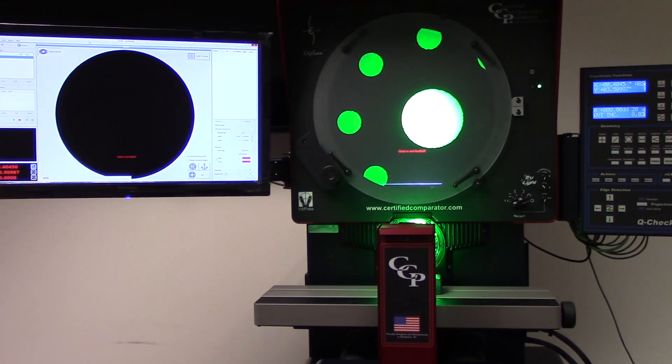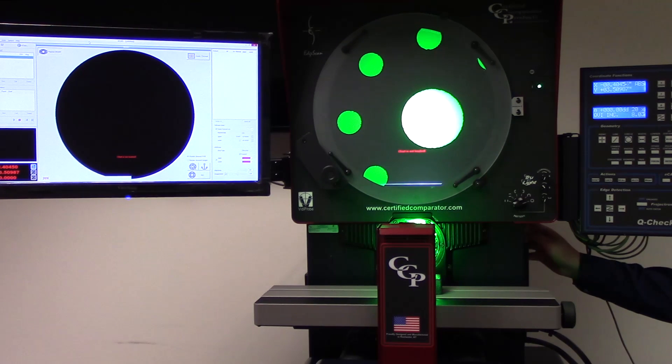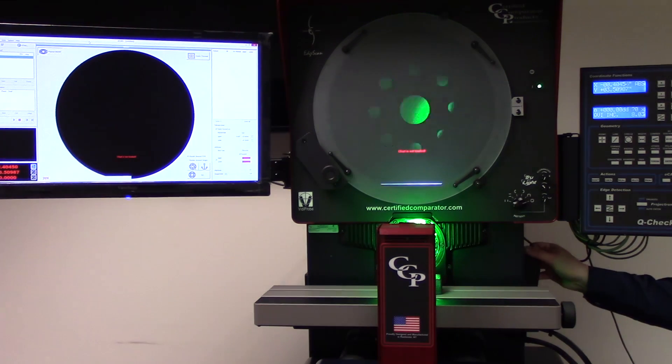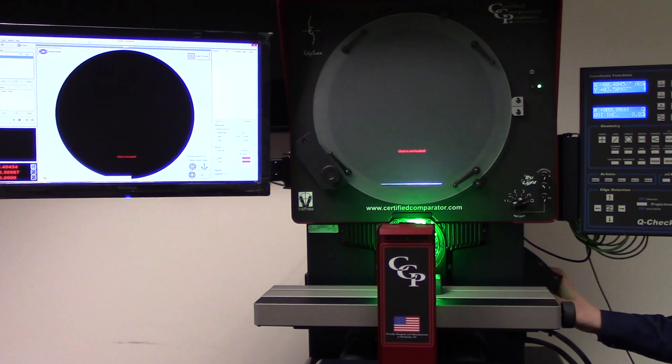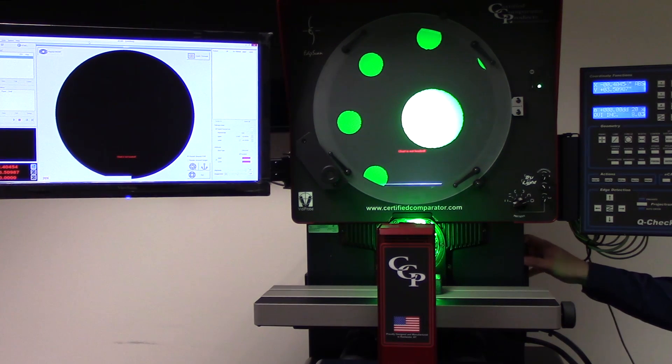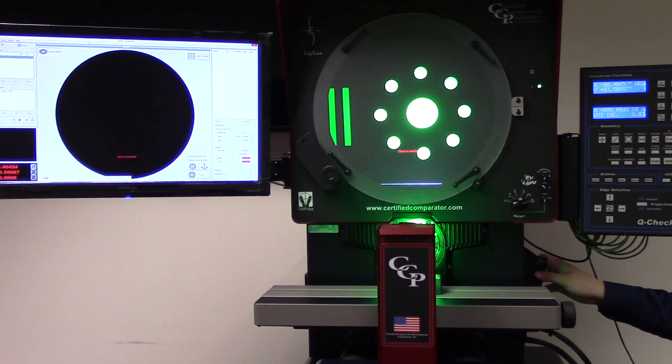This model has a three position turret with an option to have two lenses and a camera or three lenses. In this unit today we have a 20x lens and a 10x lens.